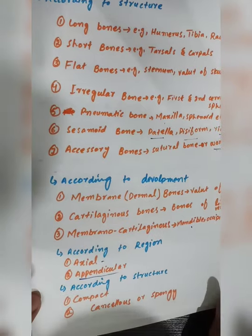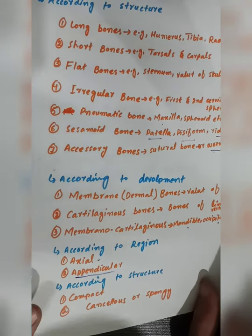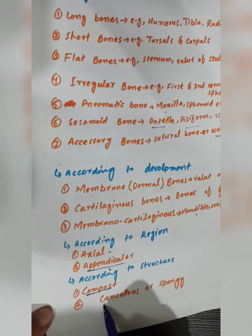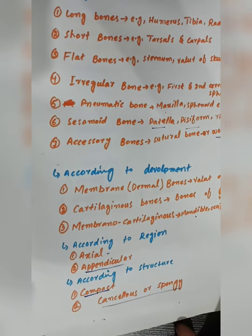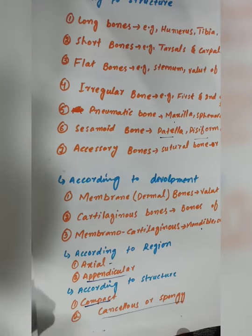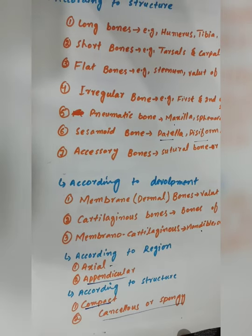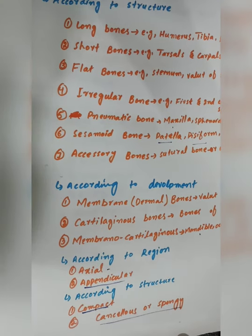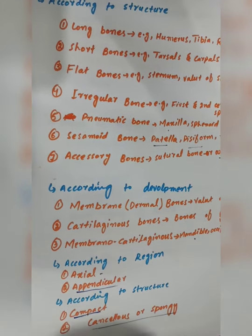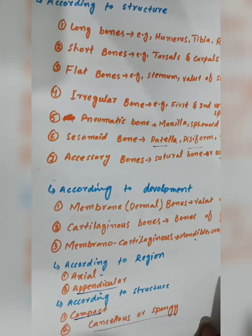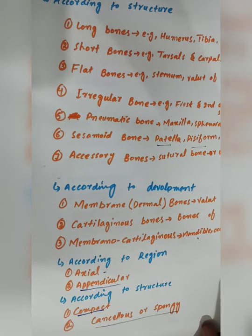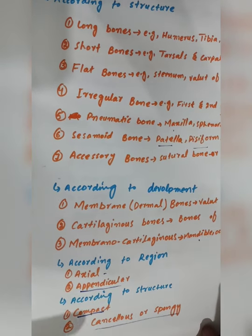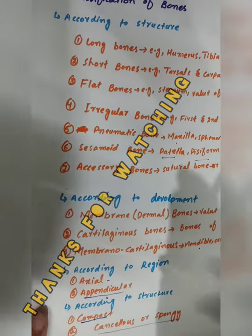According to structure, there are two types of bone. One is compact bone, which has a dense, compact structure with few pores. The other is cancellous or spongy bone, which has a porous, sponge-like structure with spaces and trabeculae. Both types differ in their density and arrangement.